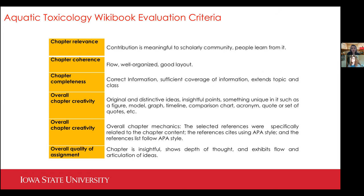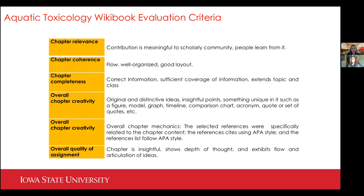We carefully craft these assignments because this is not something students are used to — they need a lot of guidance, especially undergraduate students. This is a rubric developed for the aquatic toxicology wiki book assignment. Students get to see how their work will be evaluated, and this rubric is also used by peers to give peer feedback. Peer feedback is not something easy — you need to give a lot of training about how to give constructive feedback. But we think it's an important skill to learn and practice in a course setting.